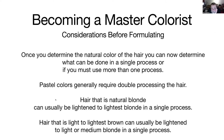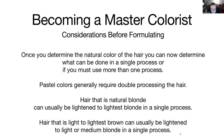Hair that is naturally blonde can usually be lightened to lightest blonde in a single process. But hair that is light or lightest brown can usually only be lightened to a light or medium blonde in a single process and still control warmth. When you try to go more than just a couple of levels lighter, you end up with hair that becomes brassy or too warm for the color formula you've created.